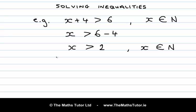So let's list the elements of the solution set of this inequality. We normally use curly brackets. x is greater than 2, so the elements are 3, 4, 5 and so on — it goes on forever. All of those are natural numbers. We haven't included 2 because x must be strictly greater than 2.